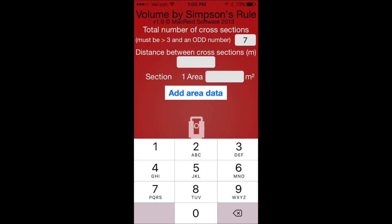First, let's enter the number of cross-sections. In this case, it's seven. Next, we can enter the distance between each cross-section, which is 25 meters.